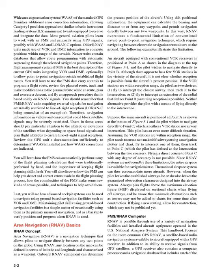Suppose the same aircraft is positioned at point A, as shown at the bottom of figure 3-1, and the pilot wishes to navigate directly to point C, which is neither a VOR station nor airway intersection. This pilot has an even more difficult situation. Assuming the VOR stations are within reception range, the pilot needs to create two makeshift airways using a navigation plotter and chart, fly to intercept one of them, then track to point C, which the pilot has defined as the intersection between the two courses. Flying a direct course to point C with any degree of accuracy is not possible.